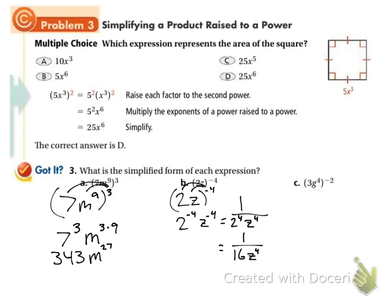And then let's try our last one. So we've got three g to the fourth to the negative two. So I need to distribute that into the three and to the g. So I get three to the negative two, g to the four times negative two. So that's three to the negative two and this is g to the negative eight. Now I can drop them to the bottom. So I get one over three squared, g to the eighth. And that's just one over nine, g to the eighth.